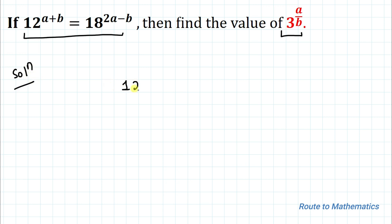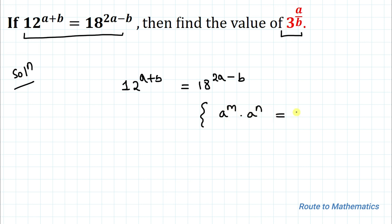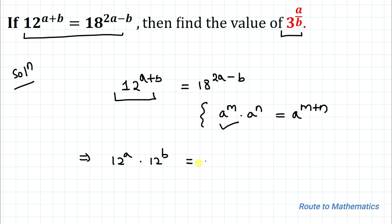We have given 12 to the power (a + b) equals 18 to the power (2a - b), where a and b are unknown variables. In the next step I will apply the exponential law: a to the power m multiplied with a to the power n equals a to the power (m + n). Applying this, I can write 12 to the power a multiplied with 12 to the power b equals 18 to the power (2a - b).